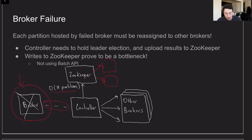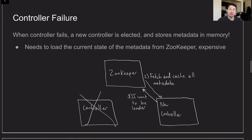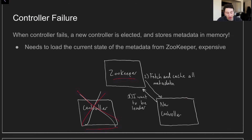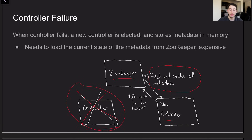If a broker goes down, any cached metadata it stores is in memory, so if it comes back up it now has to read a bunch of state from ZooKeeper — or perhaps from the controller — and there's just a lot of data that has to get sent to it, which makes it take longer to start back up after a failure. A similar scenario occurs with the controller. If one controller goes down, a new one gets elected, goes to ZooKeeper, proposes to be the leader, and ZooKeeper confirms. From there, the new controller has to fetch all of the metadata associated with the Kafka cluster, and in practice that operation can actually take multiple minutes — meaning you have multiple minutes of downtime in your Kafka cluster, making this effectively a single point of failure.